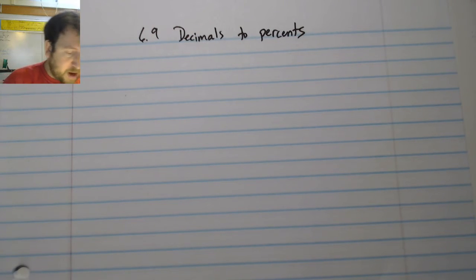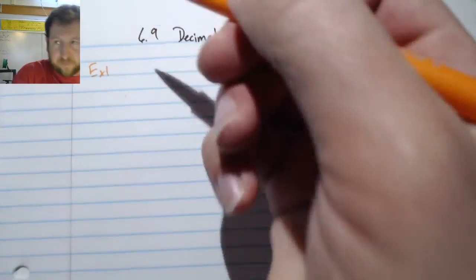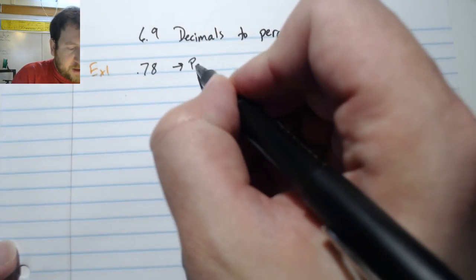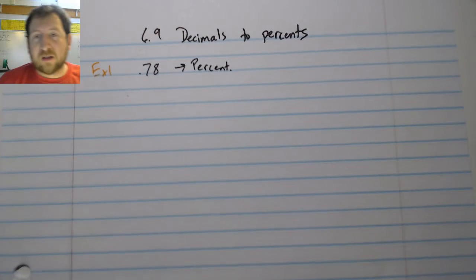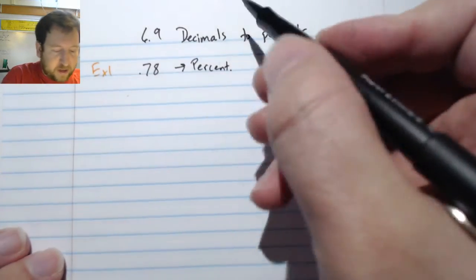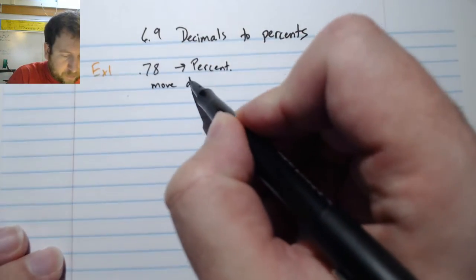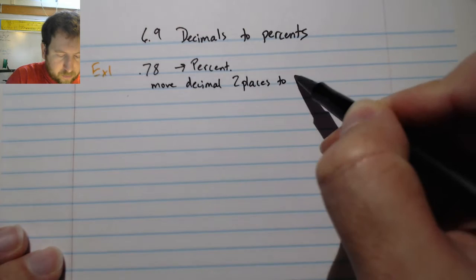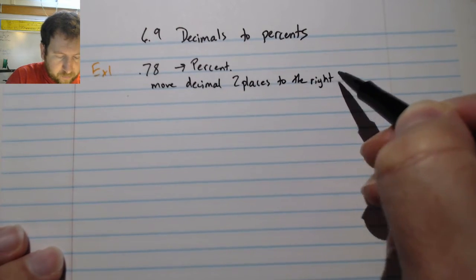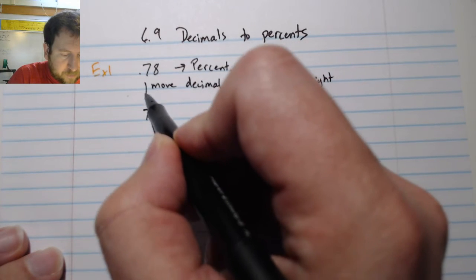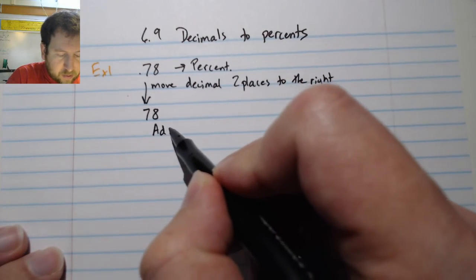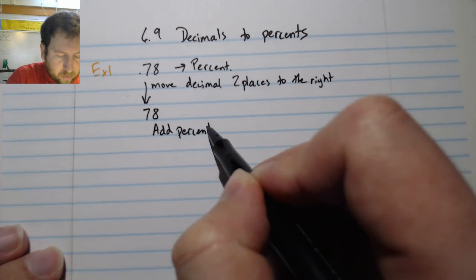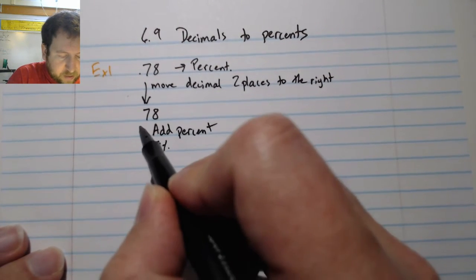For example, let's do an example right now. So I have 0.78 and I want to take it to a percent. Our steps are simply this: all we do is we move the decimal point two places to the right, gives us 78, and then add a percent. Gives us 78 percent.